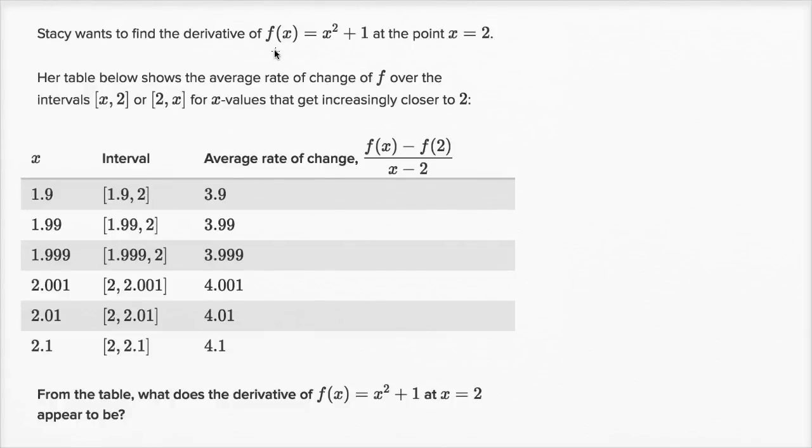Stacy wants to find the derivative of f(x) = x² + 1 at the point x = 2. Her table below shows the average rate of change of f over the intervals from x to 2 or from 2 to x (closed intervals) for x values that get increasingly closer to 2.